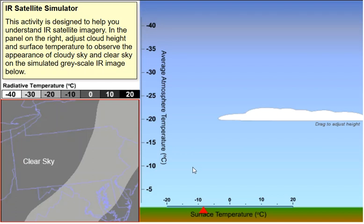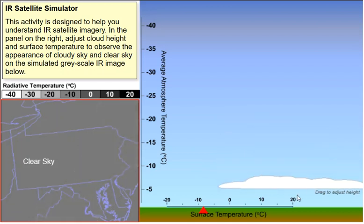But what if this mid-level cloud here was a low cloud, like Stratus? To simulate that, we'll drag the cloud down to the lower troposphere. The cloud essentially disappears on the simulated infrared image because its top has a very similar temperature to the surrounding ground.